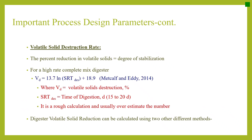Volatile solid destruction rate is the percent reduction in volatile solids and is related to the degree of stabilization. For a high-rate, completely mixed digester, volatile solid destruction rate can be calculated using the equation: Vd = 13.7 × ln(SRT) + 18.9, where Vd is the volatile solid destruction percentage and SRT is the time of digestion, usually 15 to 20 days. This is a rough calculation and usually overestimates the number.